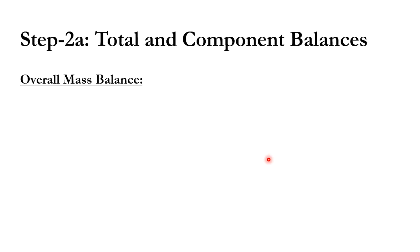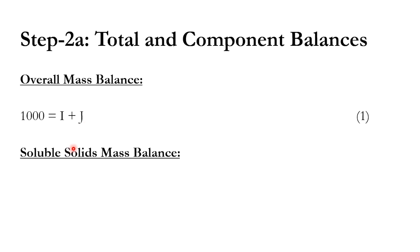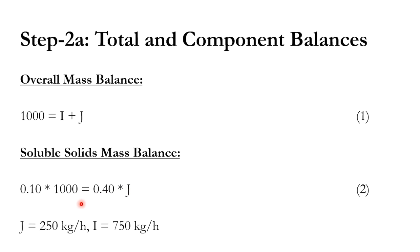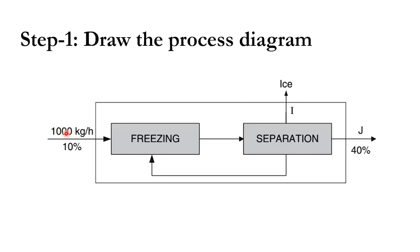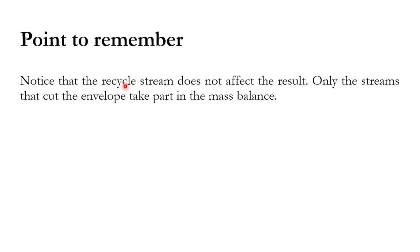Overall mass balance: 1,000 = I + J. Soluble solids balance (since ice contains no solids): 0.1 × 1,000 = 0.4 × J. Solving: J = 250 kg/hr of concentrated juice at 40% solids, and I = 750 kg/hr of ice removed. Note that the recycle stream does not affect the result — only streams that cross the system envelope participate in the mass balance.